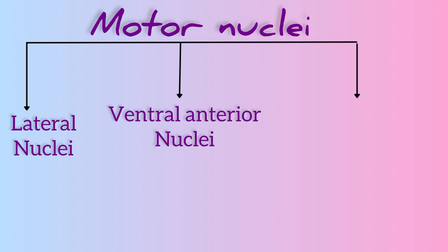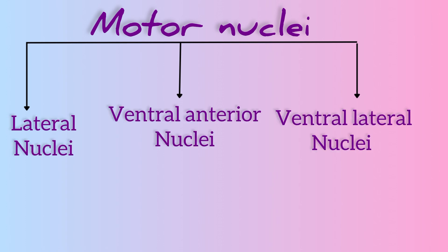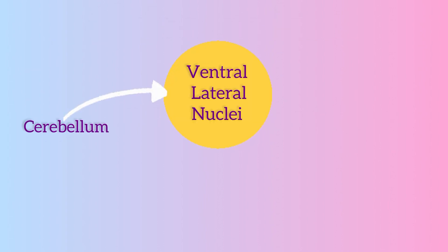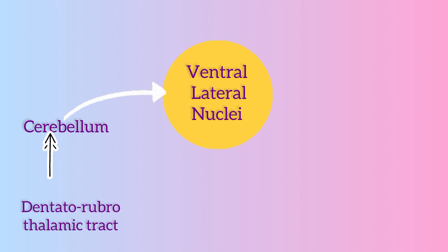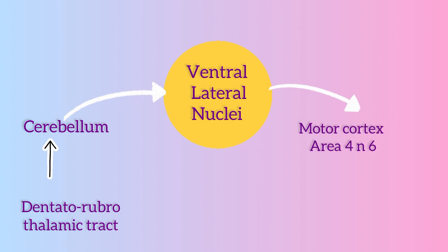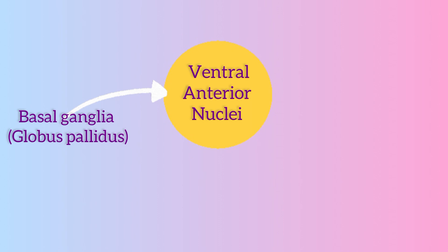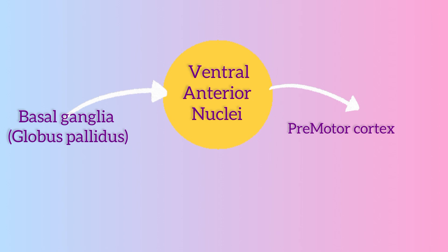Motan nuclei include the lateral ventral anterior and ventral lateral nuclei. The ventral lateral nucleus receives input from the cerebellum and basal ganglia — mainly globus pallidus — and projects to the pre-motor cortex, areas 4 and 6. The ventral anterior nucleus also receives input from the basal ganglia, mainly globus pallidus, and projects to the pre-motor cortex.